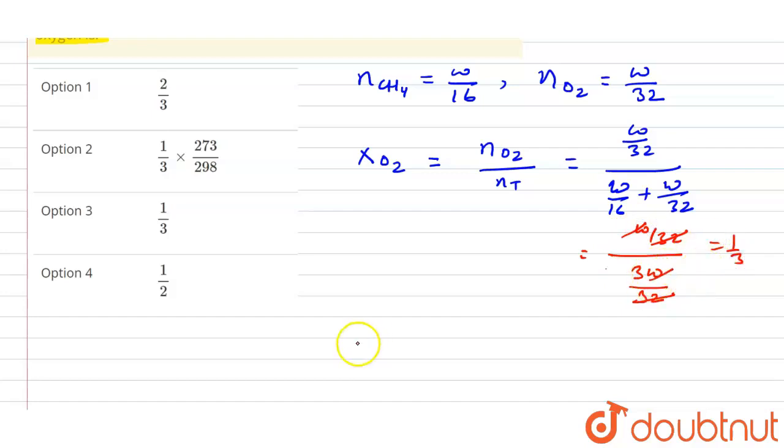So what will be the partial pressure of O2? From Dalton's law of partial pressure, partial pressure of any gas will be the mole fraction of that gas multiplied by the total pressure. So we can say this mole fraction is 1/3, so 1/3 times the total pressure.